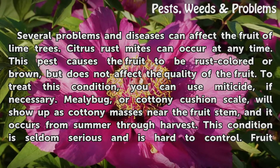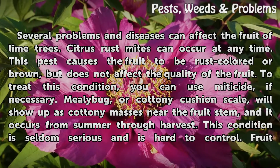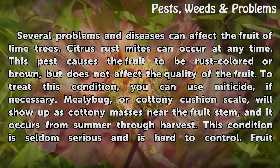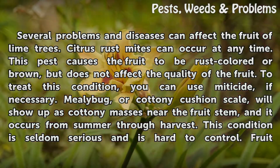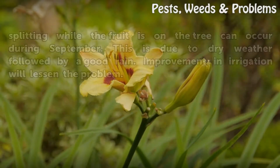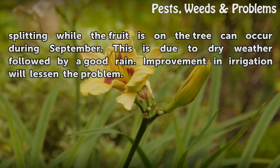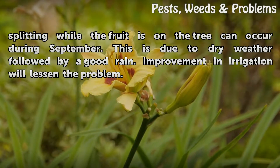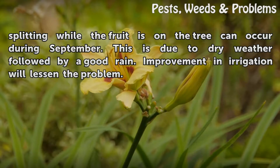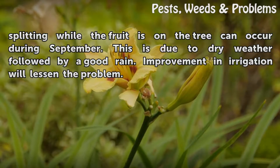Mealy bug, or cottony cushion scale, will show up as cottony masses near the fruit stem, and it occurs from summer through harvest. This condition is seldom serious and is hard to control. Fruit splitting while the fruit is on the tree can occur during September, due to dry weather followed by a good rain. Improvement in irrigation will lessen the problem.